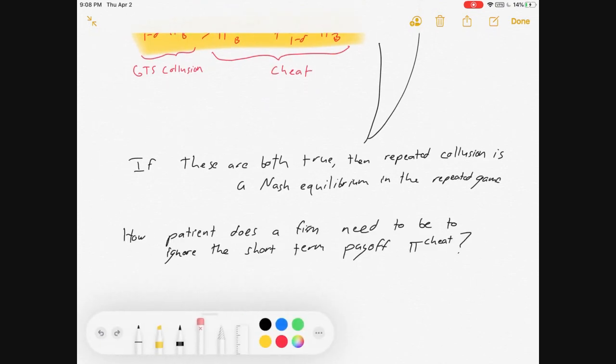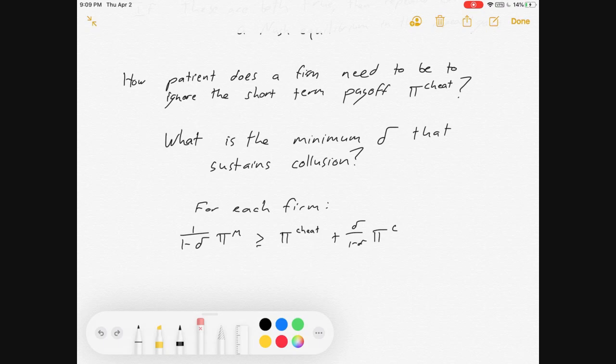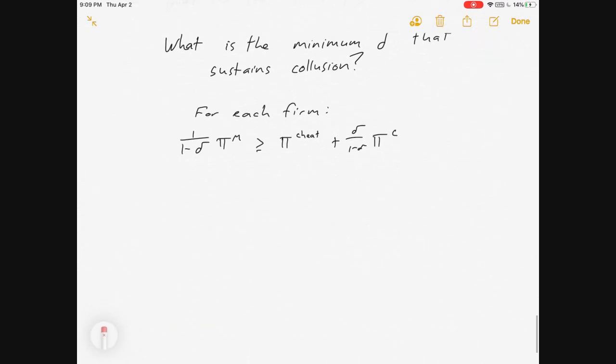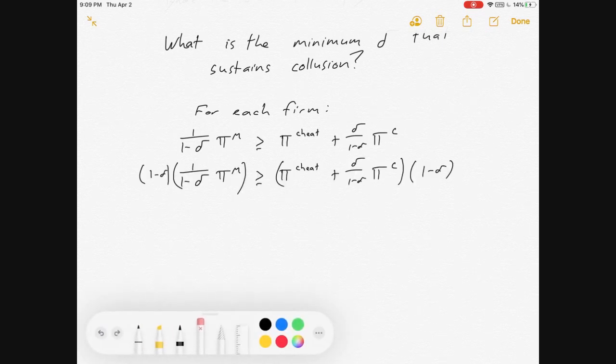So, let's move on and talk about when that might happen. How patient does a firm need to be to ignore that short-term gains from cheating? Or, a different way of phrasing it more mathematically, what's the minimum discount factor delta that sustains collusion? For each firm, we want to see something like this. And so, I'm interested in the discount factor that makes that true.